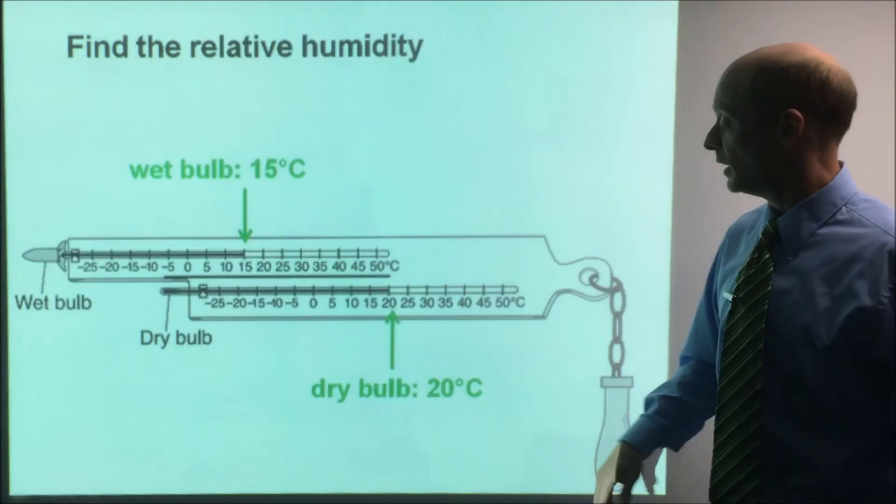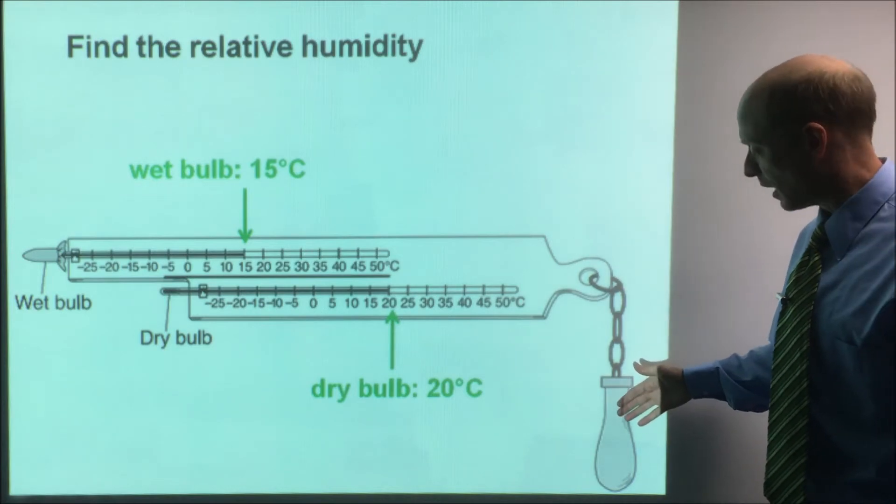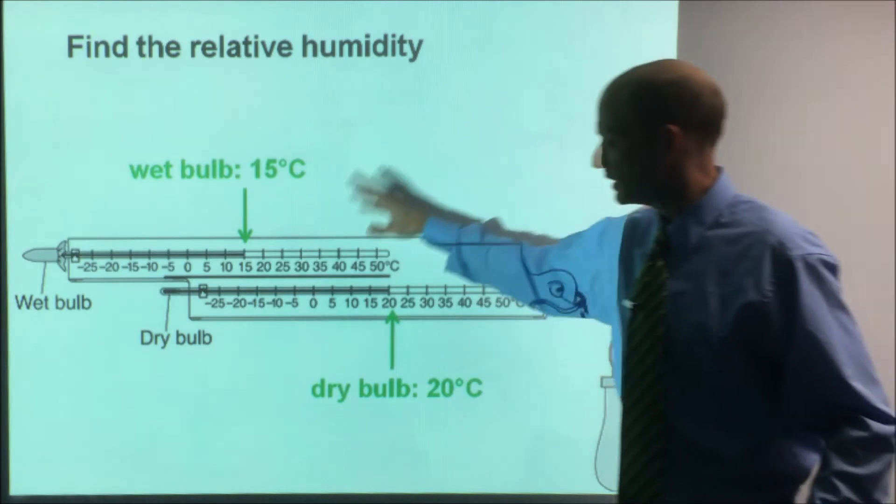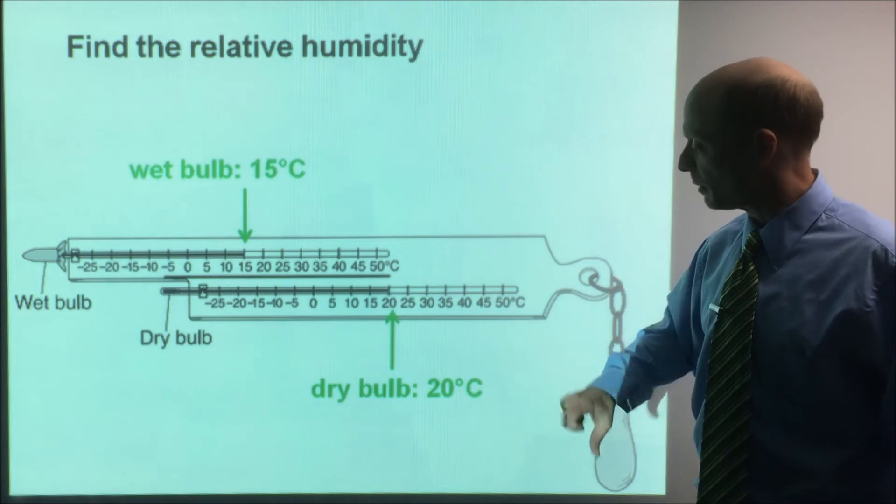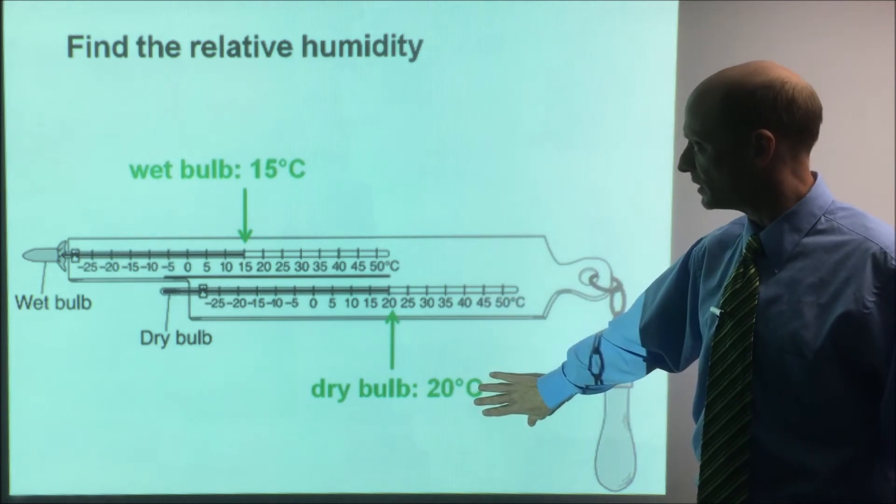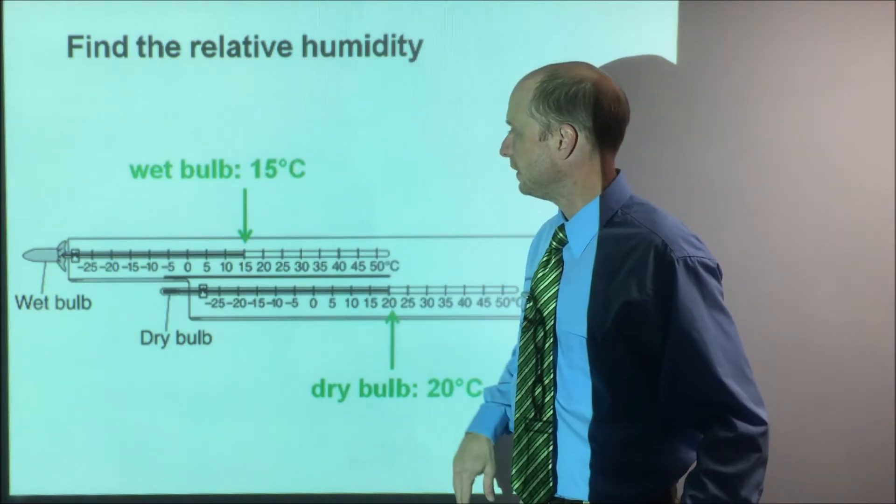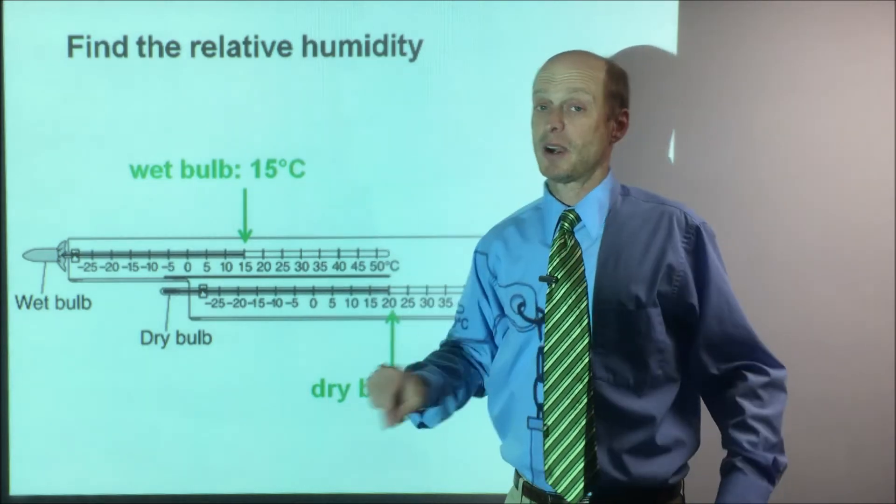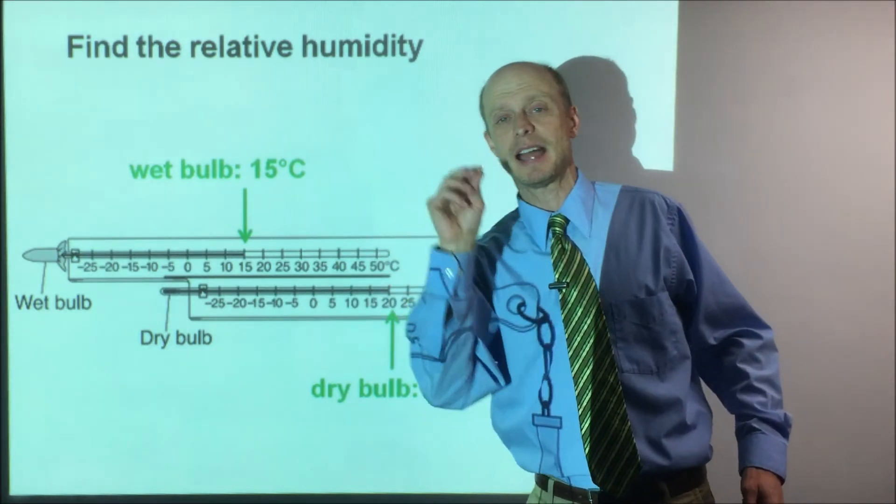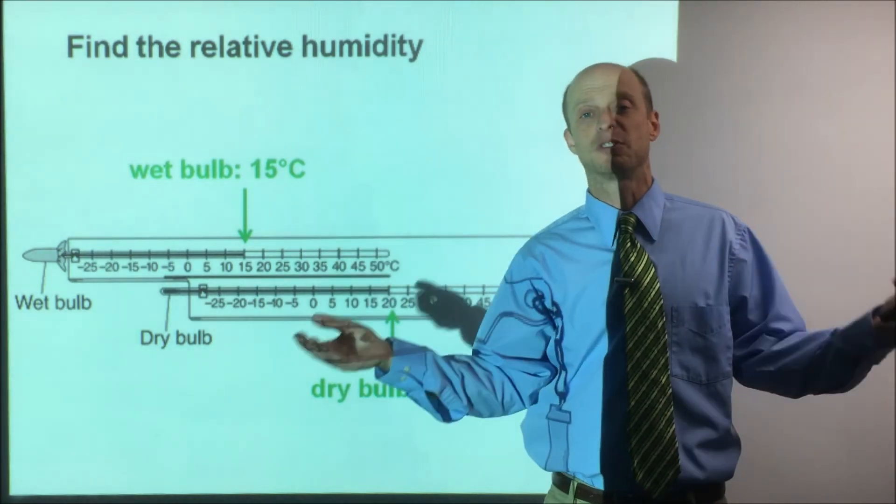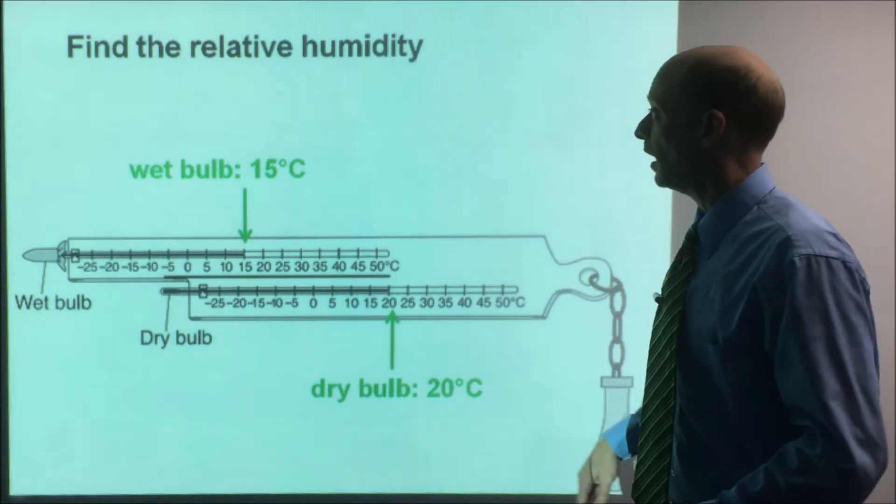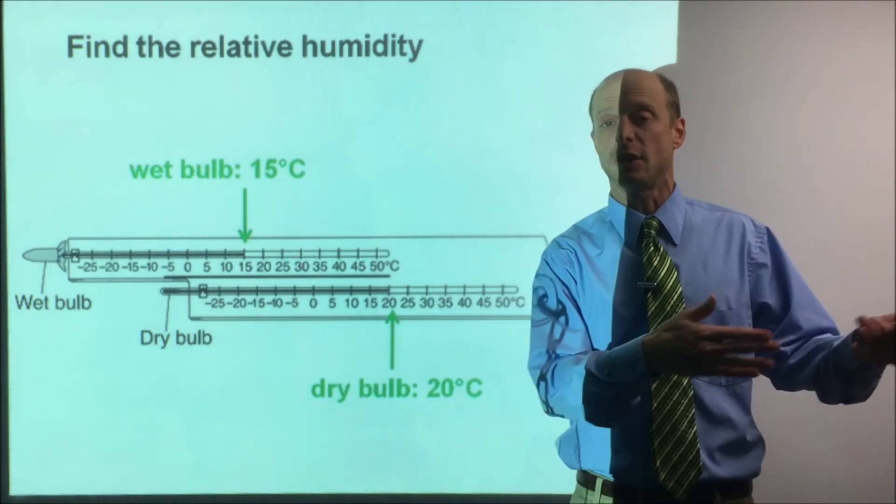Let's do another one. This is a different type of psychrometer here. And you often have to read the temperatures, a little hard to see probably. So I wrote the dry bulb here is 20 degrees C and the wet bulb is 15 degrees C. And in this case, we're asked to find the relative humidity. That is how much moisture is in the air percentage wise. And again, you get condensation when that's 100%.